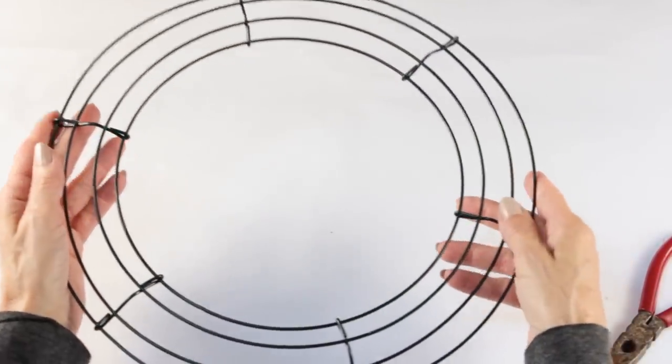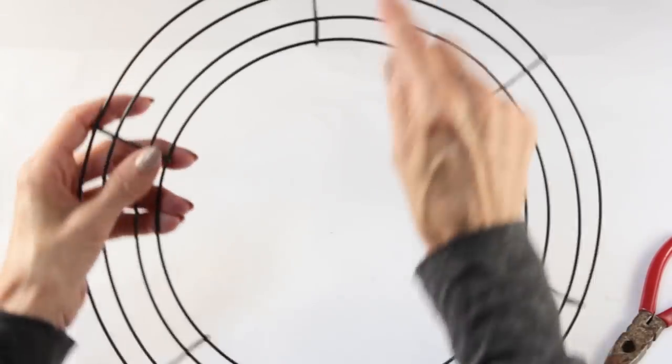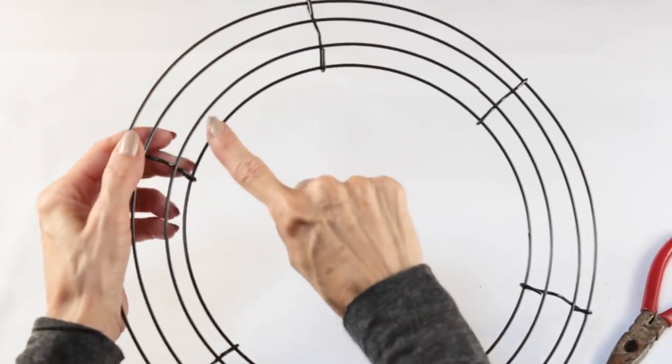We're going to start with our 12 inch wire wreath form. We're going to remove the inside metal support.